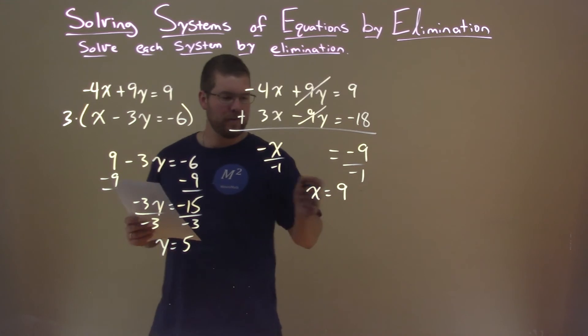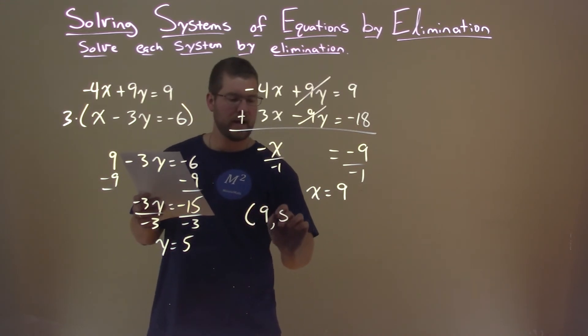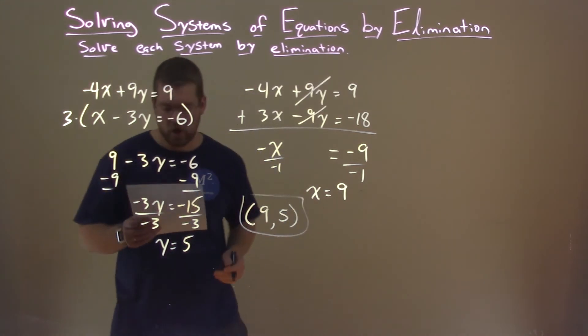So we have y is 5, x is 9. We can write that as a coordinate point, 9 comma 5, and that is our answer.